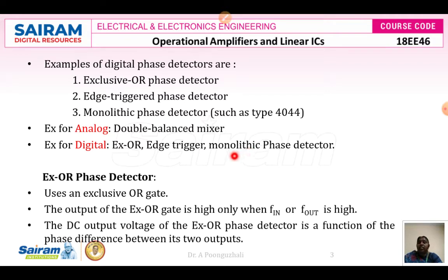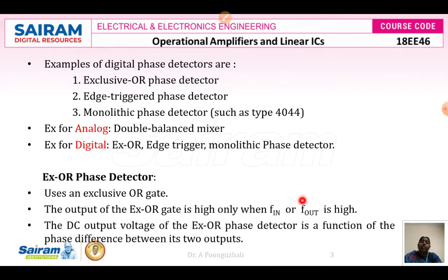First we will see the exclusive-OR phase detector. The name itself tells us that we are going to use an exclusive-OR gate to realize the phase detector. The output of the phase detector is going to be high only when F-in or F-out is high — that is, when any one of the inputs is high. Only one input should be high. If both inputs are the same, the output is going to be zero.